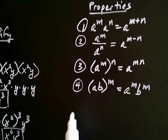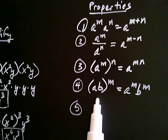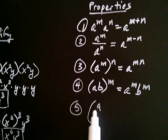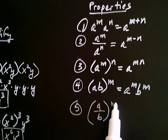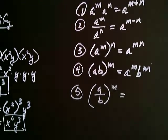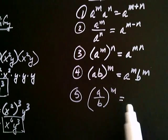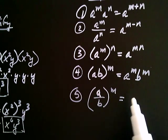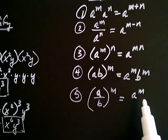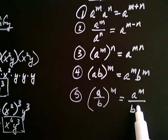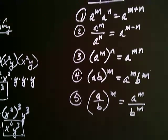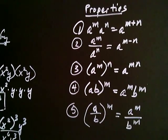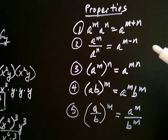So the fifth property is: a divided by b to the nth power equals a to the nth over b to the nth — both the numerator and denominator get raised to the exponent. So these are our five properties of exponents, and they arise so frequently that you may want to memorize them, or at least know how to apply them. Let's take some examples making use of these properties.